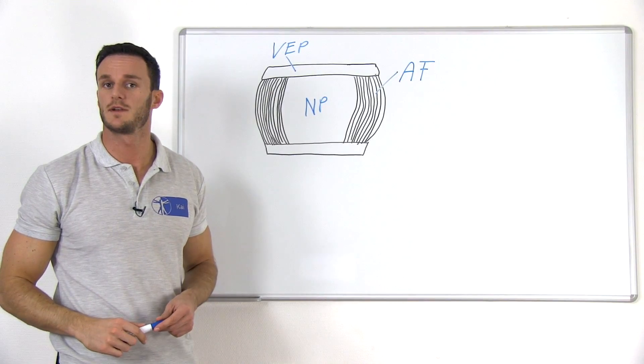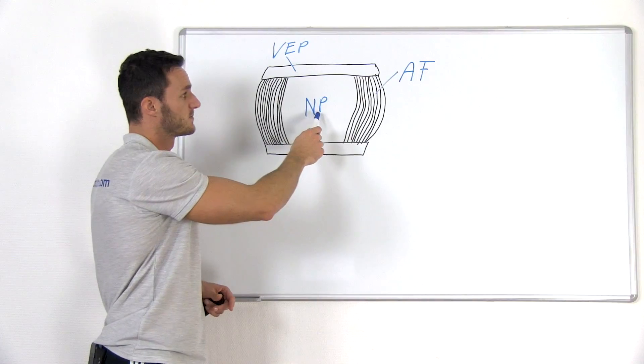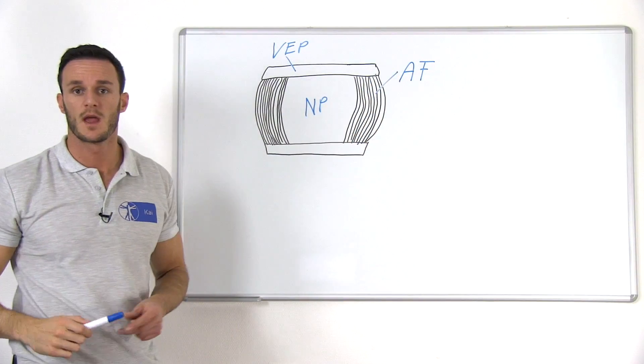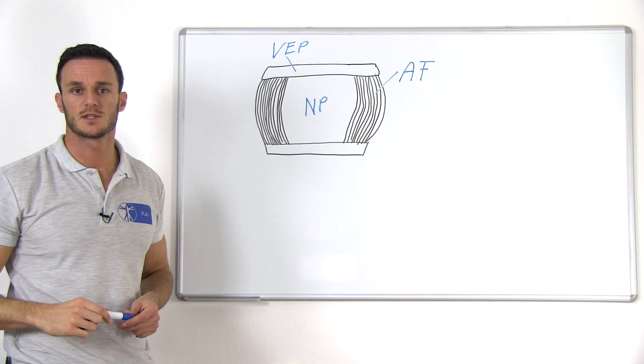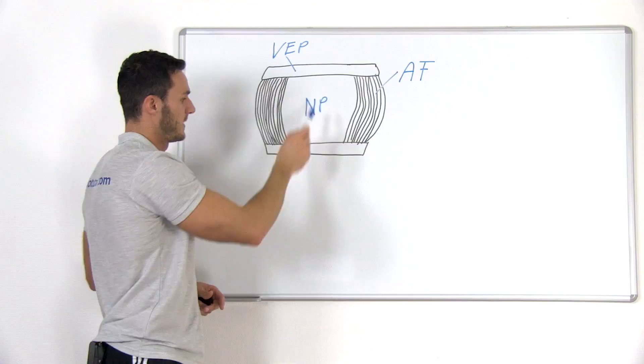If we look at the internal structure of an intervertebral disc, we see two basic components: the nucleus pulposus and the annulus fibrosis. On top of both of those two structures, we find two layers of cartilage called the vertebral end plates.